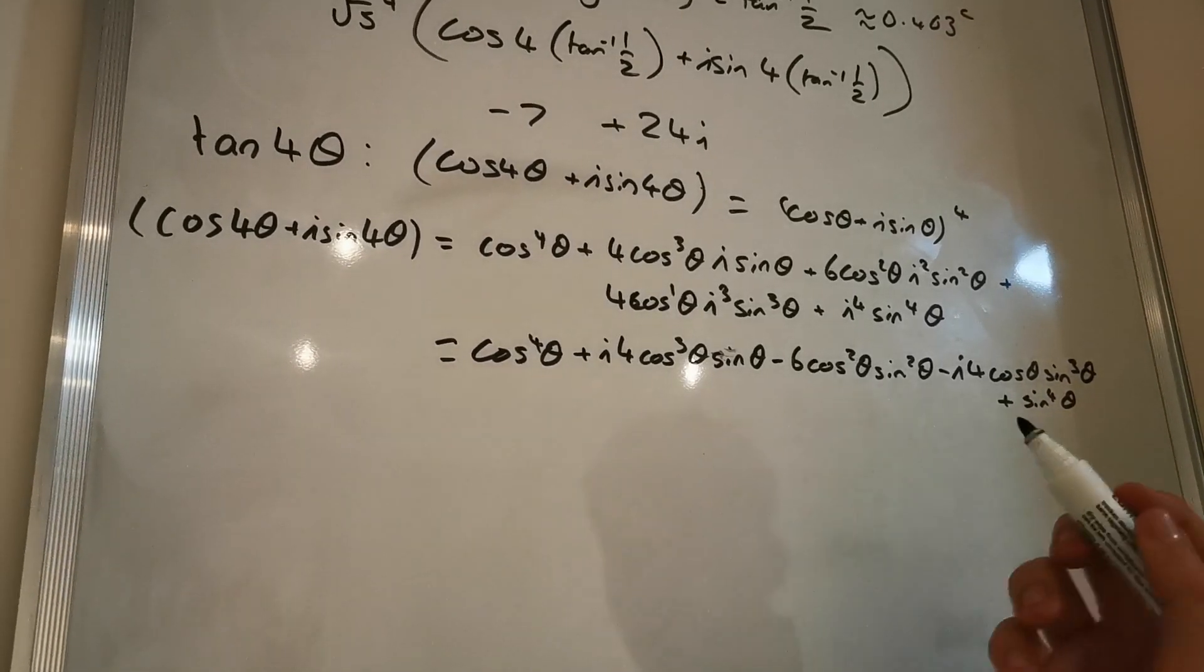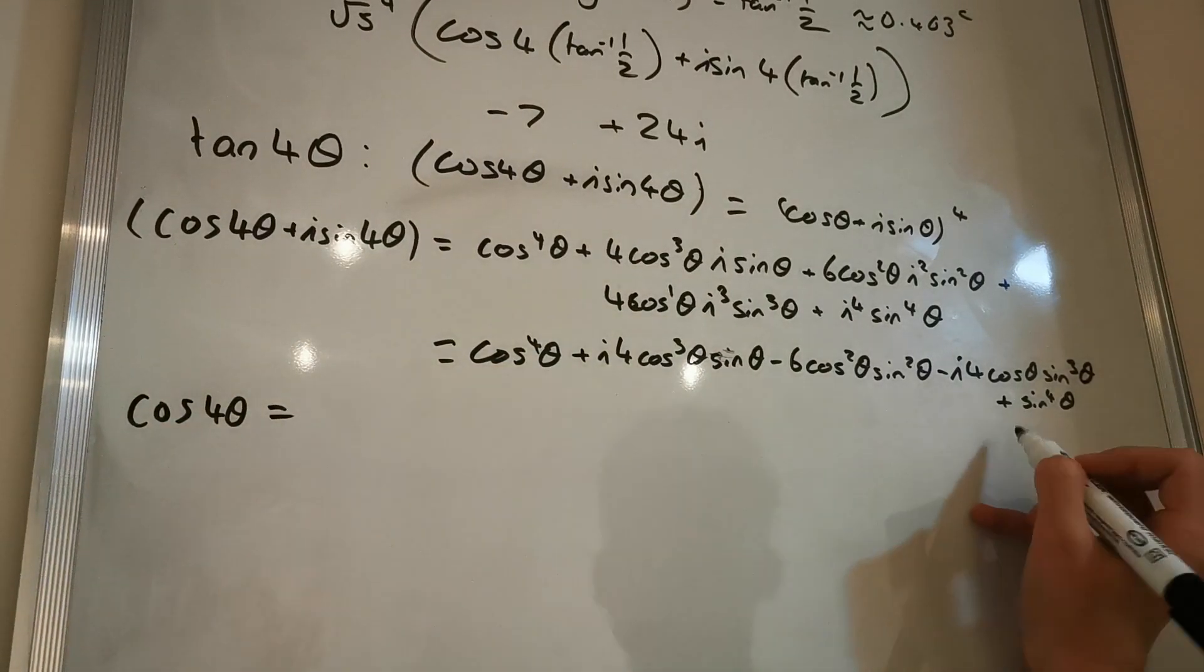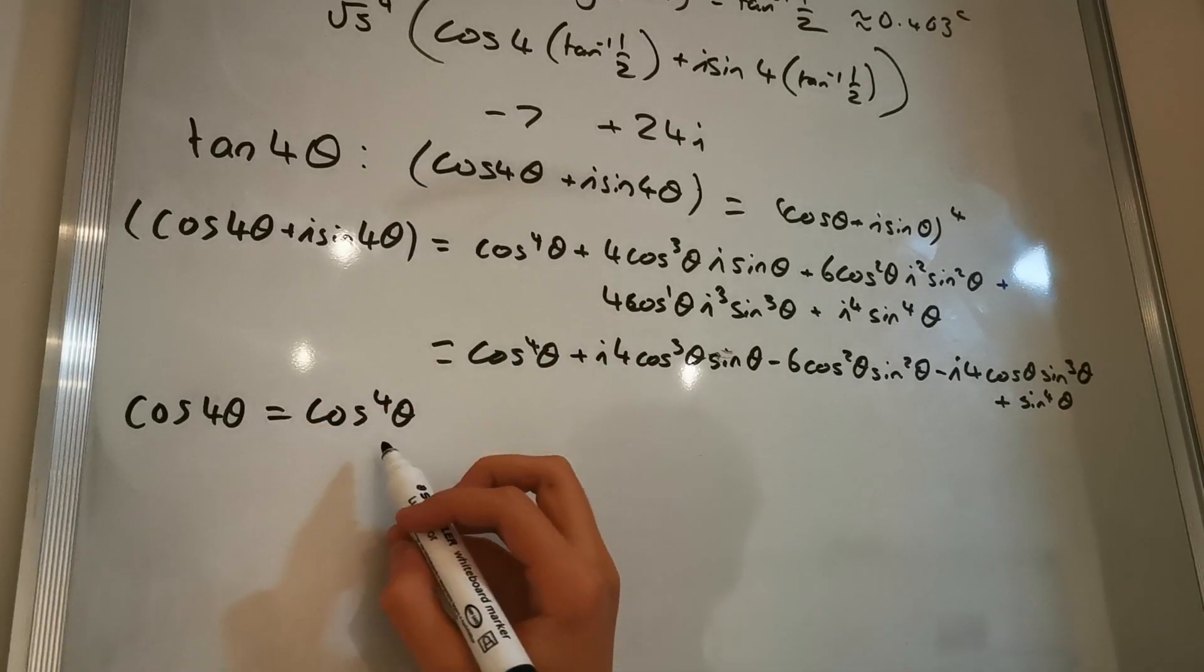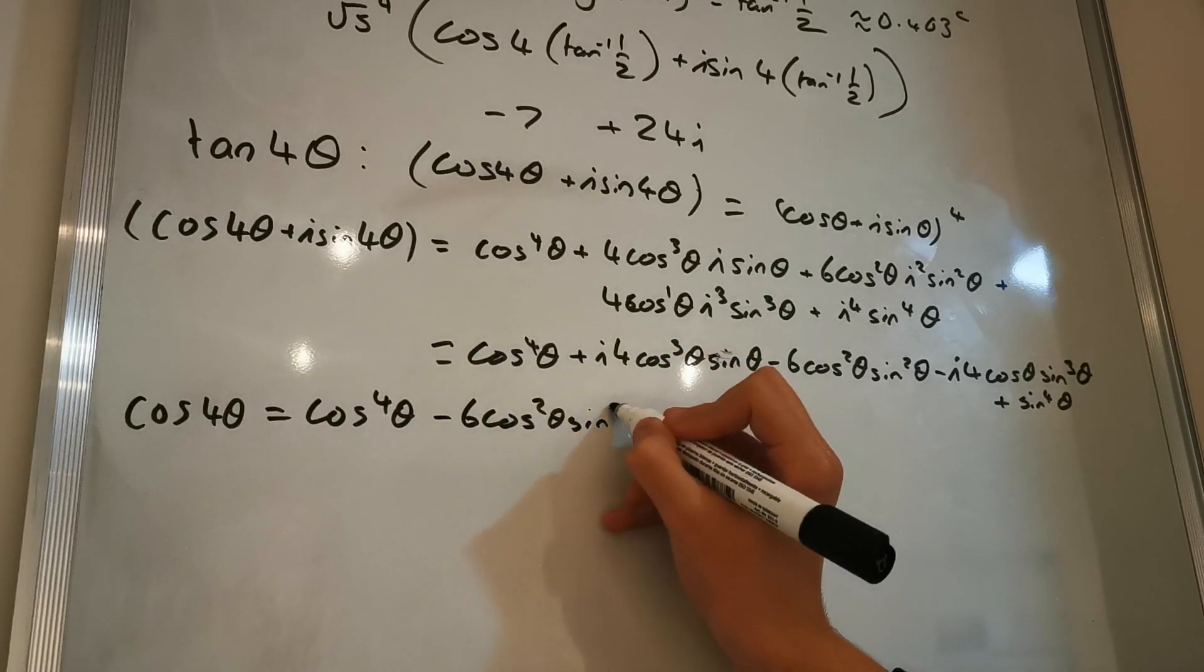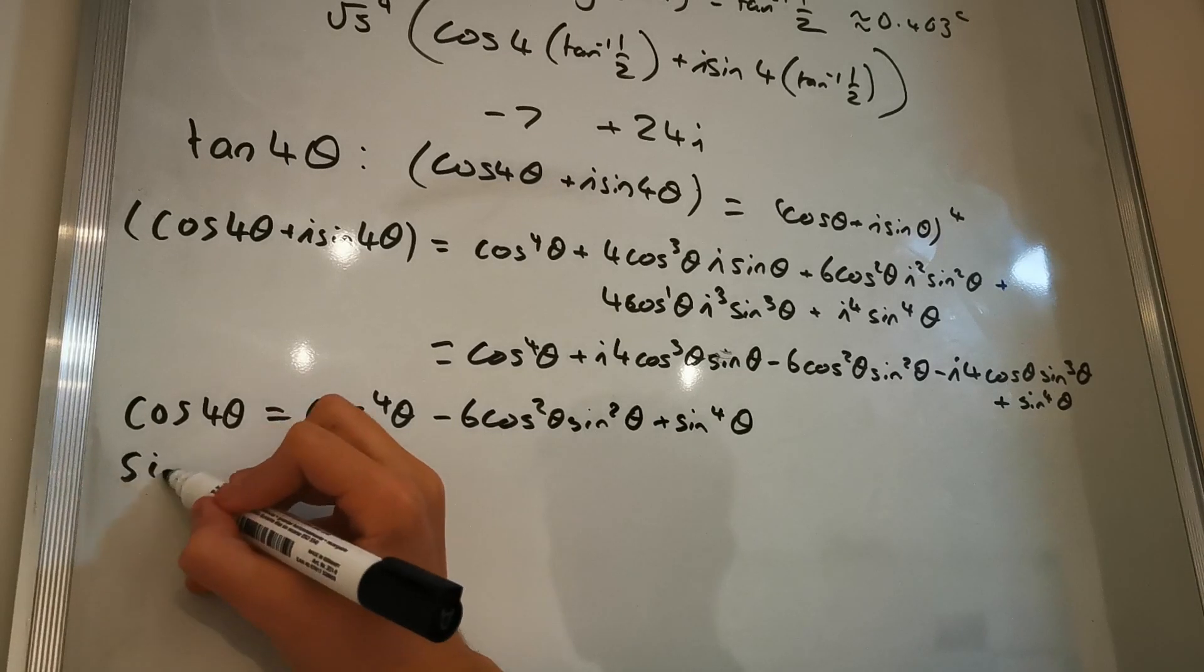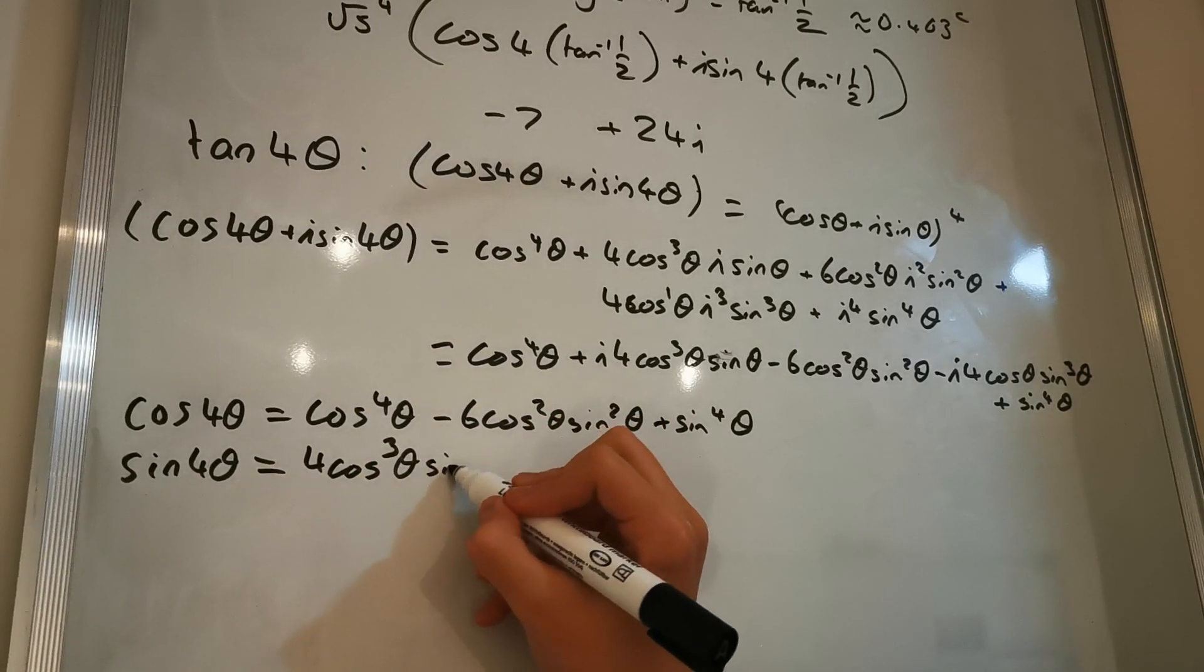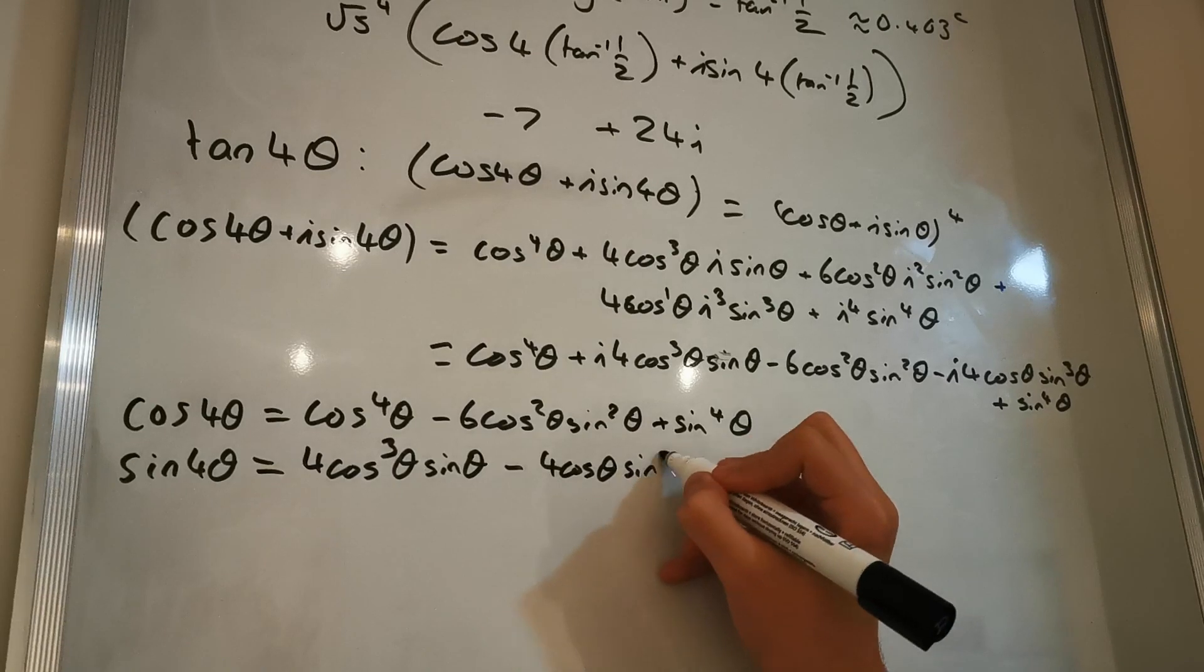We are going to then equate real and imaginary. cos(4θ) is equal to anything that doesn't have an i in front of it. So cos^4(θ) - 6cos²(θ) sin²(θ) + sin^4(θ). And then we're going to say that sin(4θ) is going to be equal to everything with an i in front of it. So 4cos³(θ) sin(θ) - 4cos(θ) sin³(θ).